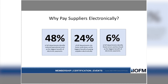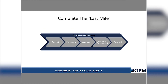Why are businesses saying they've got to get rid of paper checks? The number one reason is recognizing the costs associated with them. 48% of AP departments identify reduced operational costs as the reason for cutting paper check volumes. We know there are huge cost savings to be had when you pay suppliers electronically. A quarter of AP departments cite faster cycle times as the biggest benefit — you're able to generate and deliver payments more quickly, which helps eliminate supplier inquiries, mitigate fraud, improve reporting, and manage cash. Additionally, 6% of AP departments identify fewer errors and less fraud as the biggest benefit. Cost savings, faster cycle times, and fewer errors — what's not to like about electronic payments?